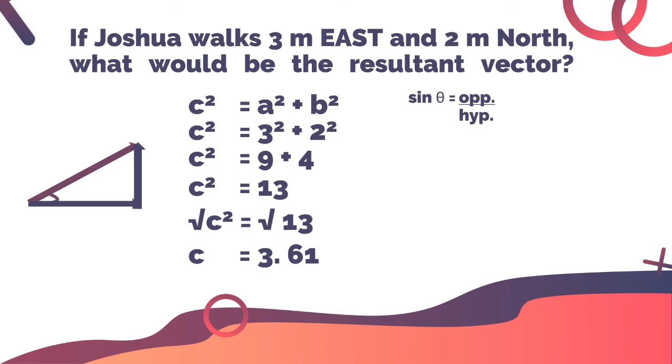Let us substitute the values of the opposite and hypotenuse, which is 2/3.61. So sin θ = 0.55. Now we need to move sine to the other side of the equation. So θ = sin⁻¹(0.55). Therefore, θ = 33.37 degrees.